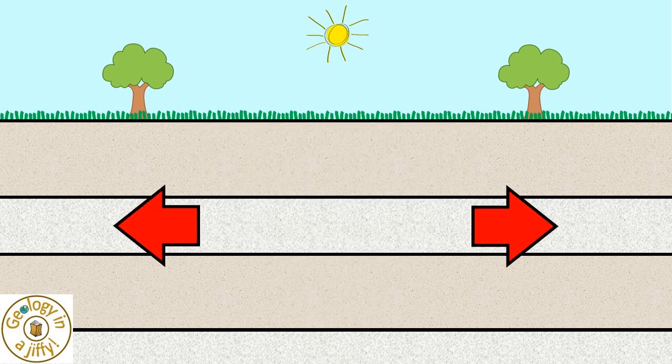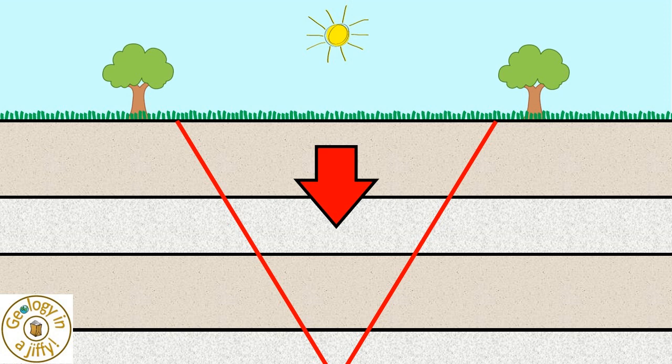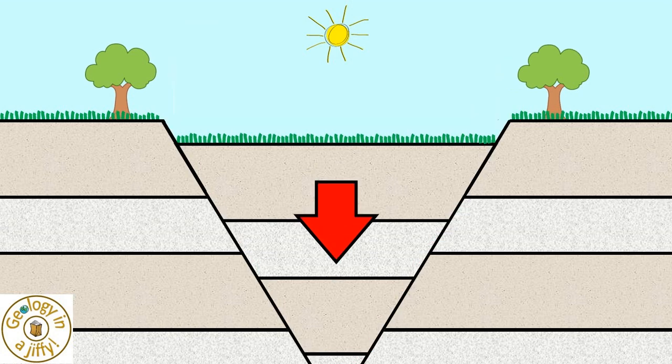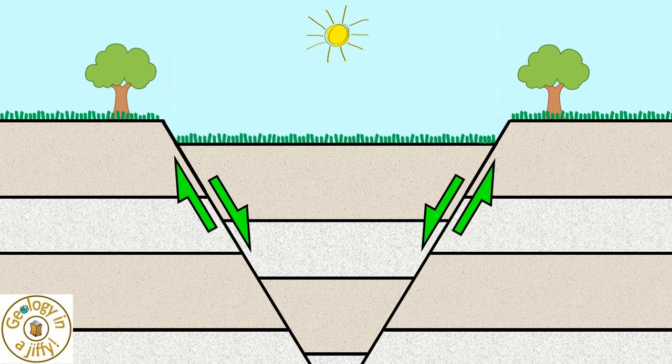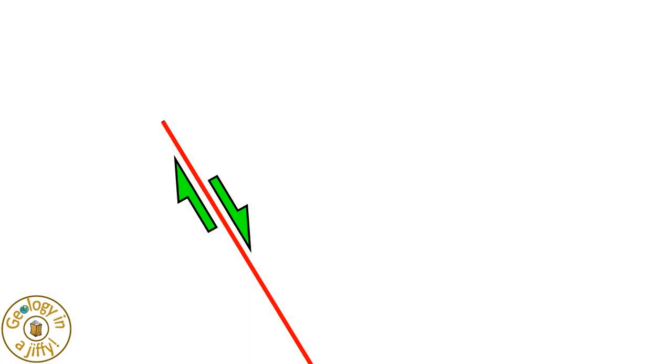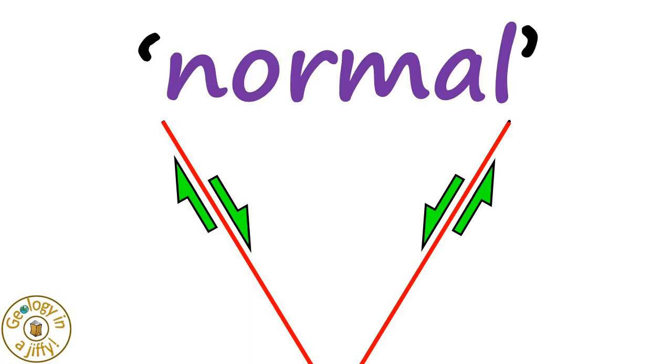As the crust extends, fracture zones appear, resulting in the central block dropping downwards. The central hanging wall block moves downwards in relation to the upward movement of the foot wall, moving along these two parallel fracture zones, which are both normal faults.